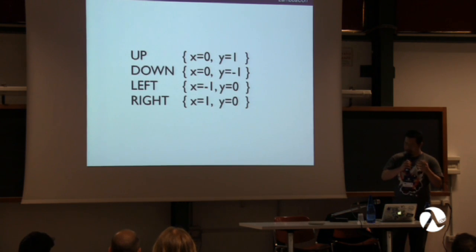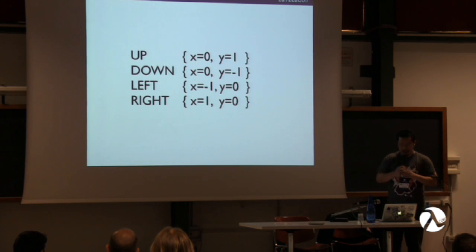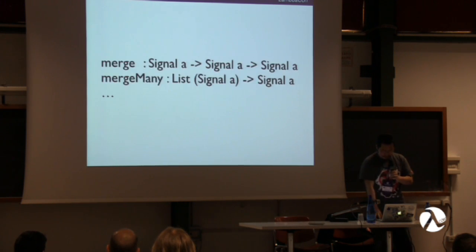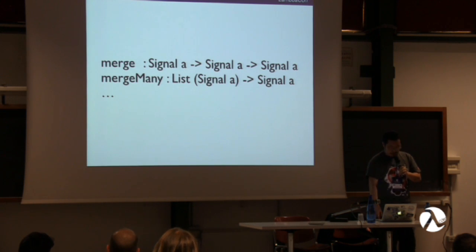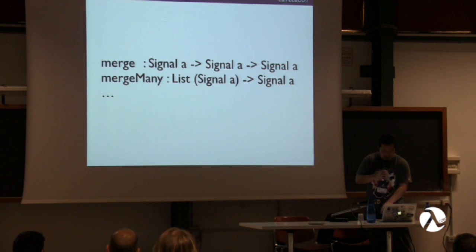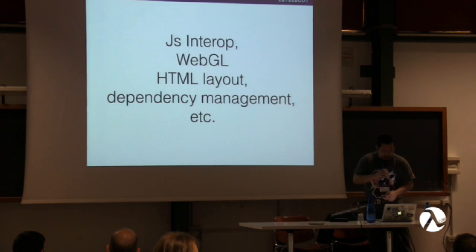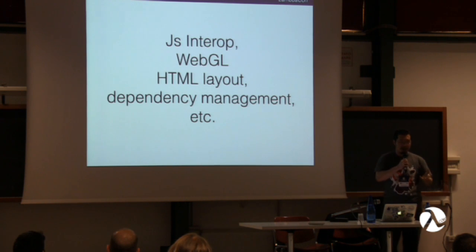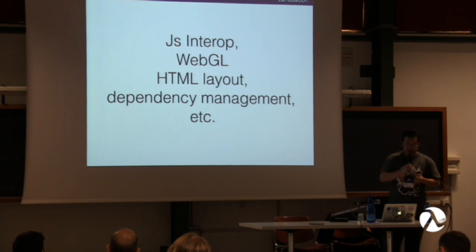When you use keyboard arrows, you get back a record with x and y integer values with a directional mapping. There are also other operators for composing signals together, and Elm has support for JavaScript interop, WebGL, and HTML layout — but we won't go into those today.